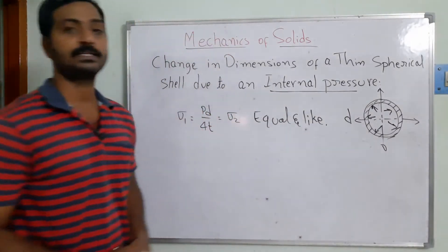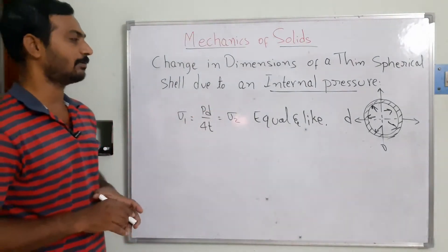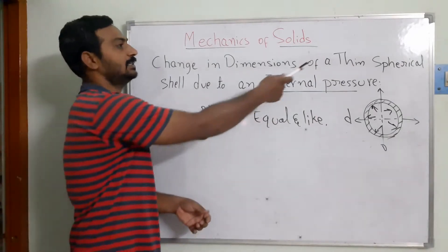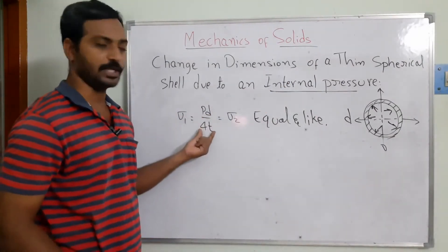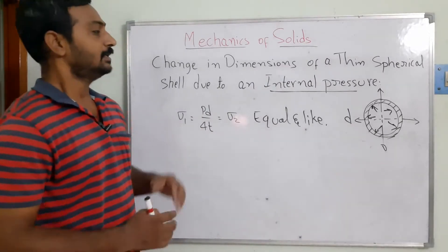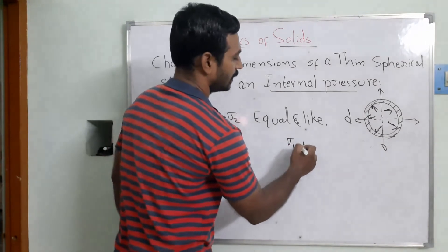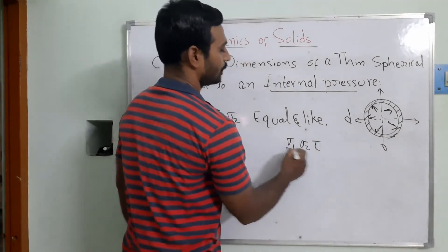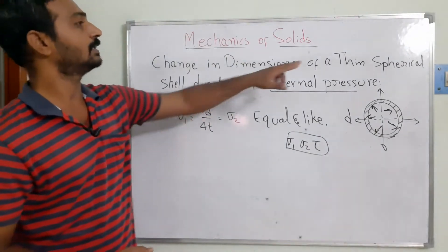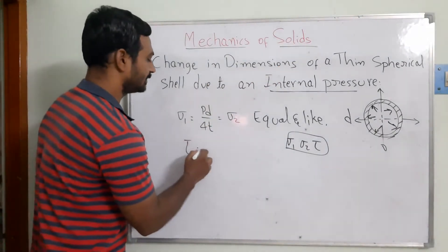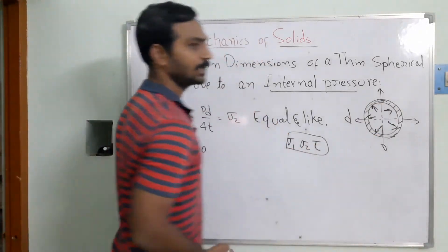For thin cylindrical vessels, Sigma 1 = PD/2t, meaning the thin cylindrical shell is subjected to Sigma 1, Sigma 2, as well as shear stress tau — three forces are generated. But when it comes to thin spherical shells, tau is always going to be zero, because the material is not subjected to any shear stresses.